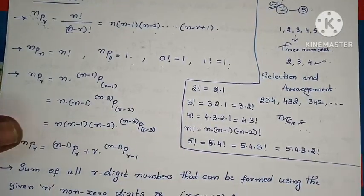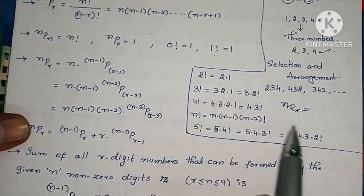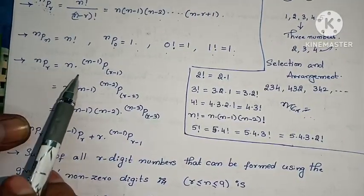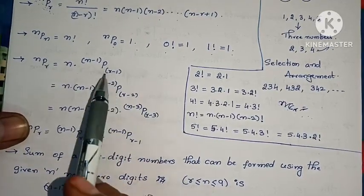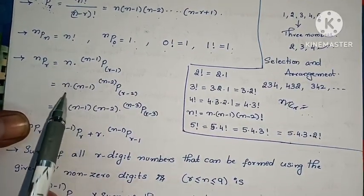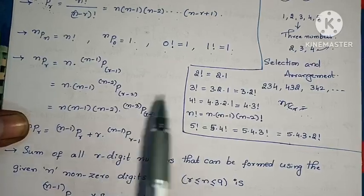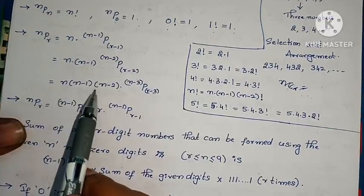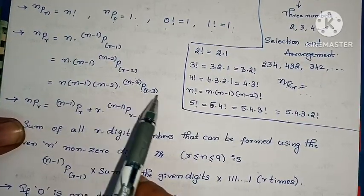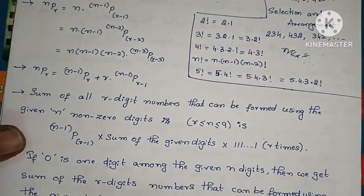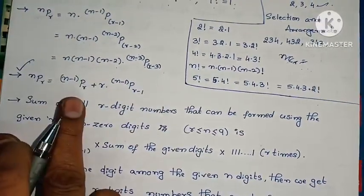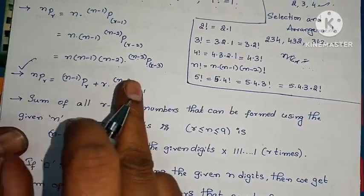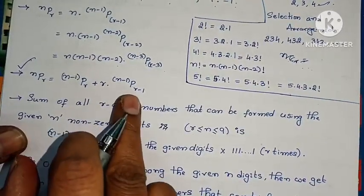NP0 equals 1. NPR equals n into (n-1)P(r-1). Also, NPR equals n into (n-1) into (n-2)P(r-2). And NPR equals n into (n-1) into (n-2) into (n-3)P(r-3). Another property: NPR equals (n-1)PR plus r into (n-1)P(r-1).